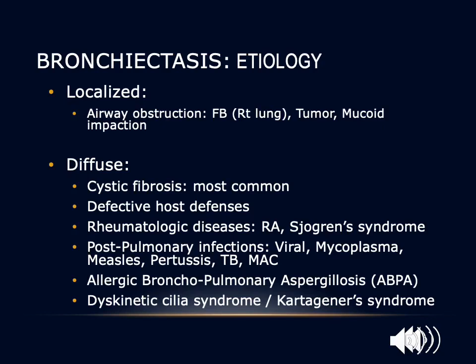Other causes of diffuse bronchiectasis include defective host defenses, rheumatological or connective tissue diseases like rheumatoid arthritis and Sjögren's syndrome, and post-pulmonary infections during childhood or early adulthood caused by viral, mycoplasma, measles, pertussis, sometimes tuberculosis and mycobacterium avium complex. These infections can cause severe airway abnormalities leading to abnormal dilatation and subsequent infections, causing bronchiectasis later in life.